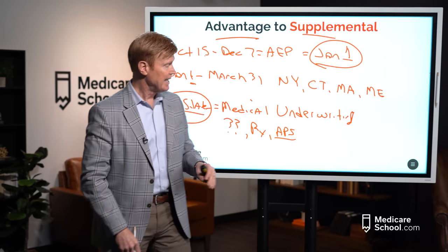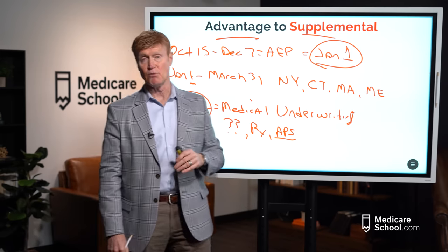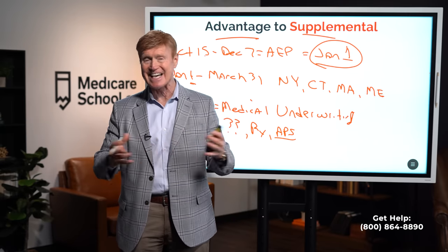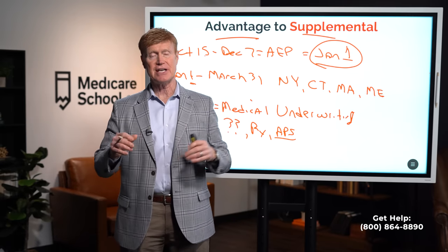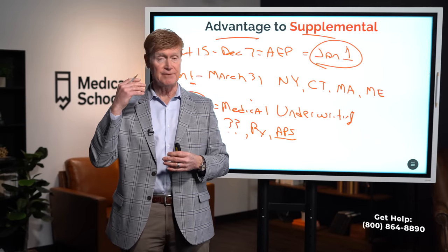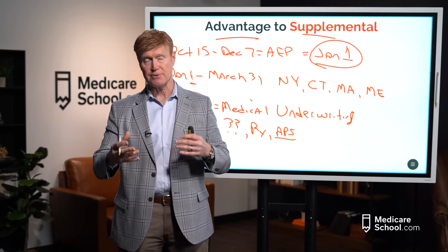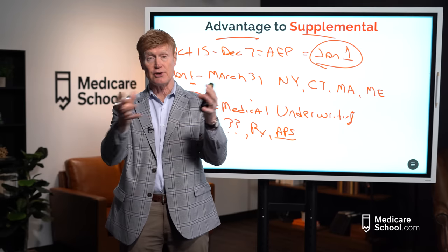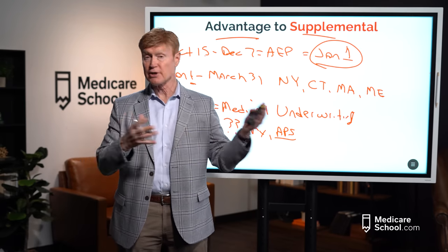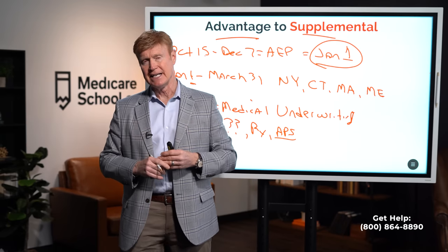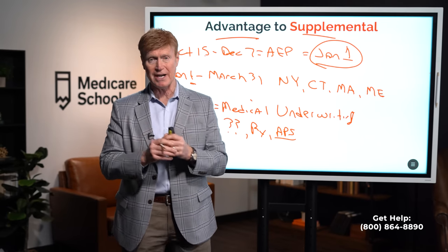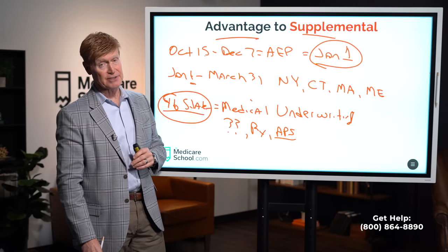You have to be aware that you may have to go through medical underwriting. There is a time when you don't — and that is when you first start Medicare. When you start Medicare Part A and B, the Part B date gives you a window of opportunity to get any Medigap policy in any state, any company, with no underwriting. You can apply six months before you start Medicare and up to six months after.